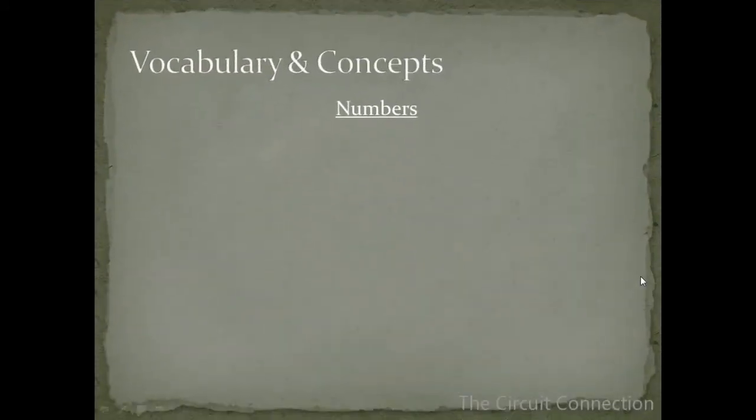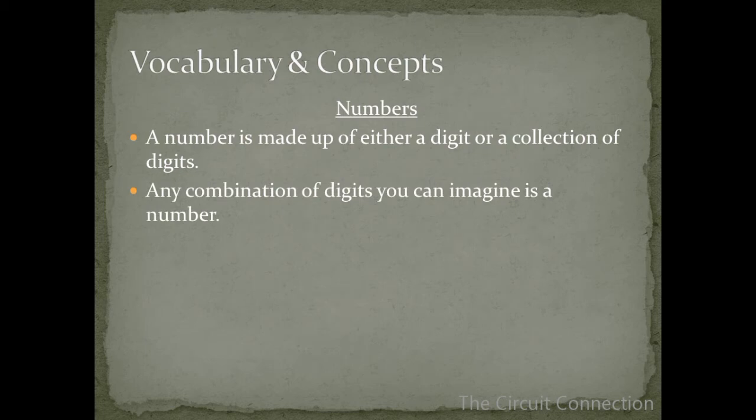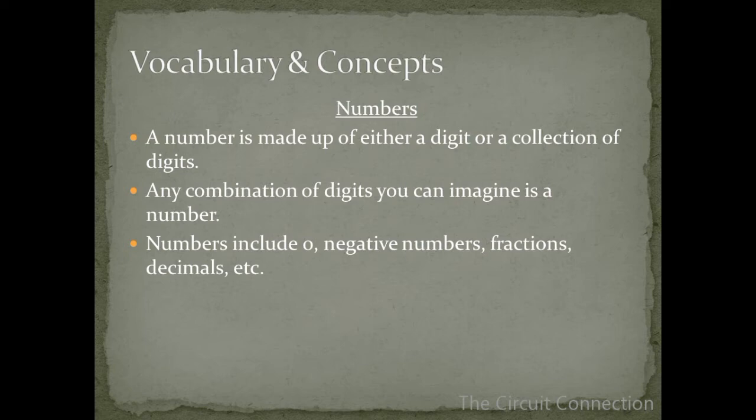Numbers. What's a number? Well a number is made up of either a digit or a collection of digits. Any combination of digits you can imagine is a number. Numbers include 0, negative numbers, fractions, decimals, etc.